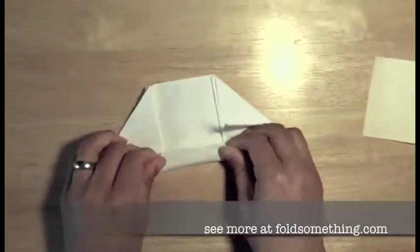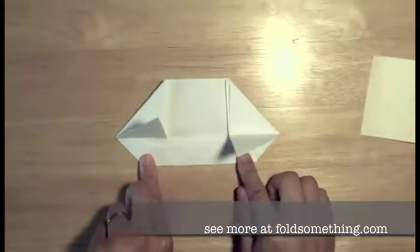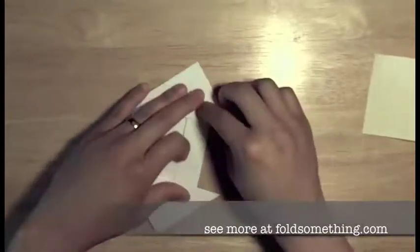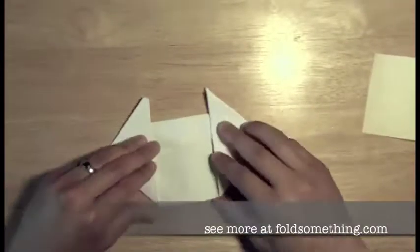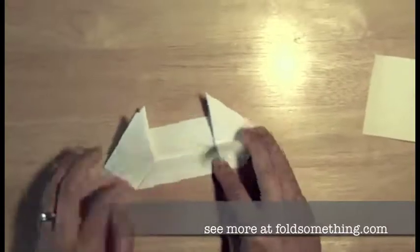Now we're going to lift up these two flaps and take this edge and fold it in towards the middle. We'll rotate this and do the exact same thing on the other side. From this arrow shape here,